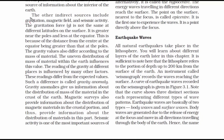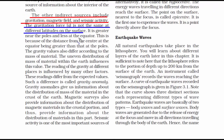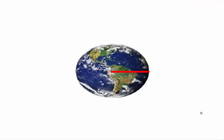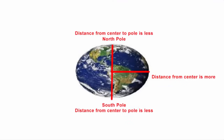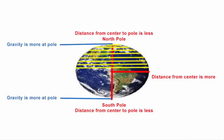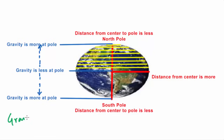Other indirect sources include gravitation, magnetic field, and seismic activity. Gravitational force is not the same at different latitudes — it is greater near the poles and less at the equator. The reason is that the earth is not a perfect sphere; it is bulged at its center, so its distance from the center at the equator is comparatively more than at the poles. Gravity is maximum at the place nearest to the center, so gravity is more at the poles and least at the equator.